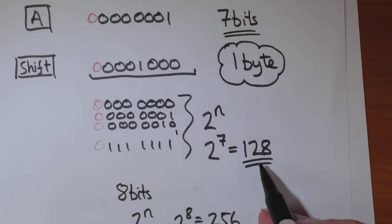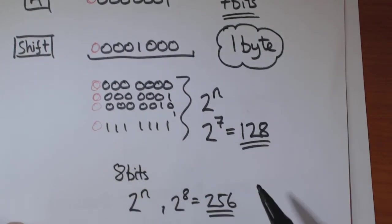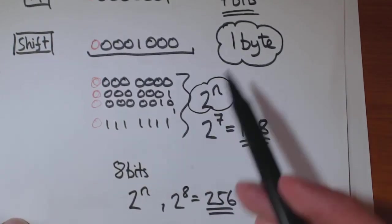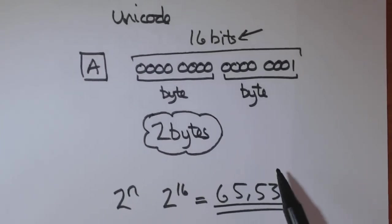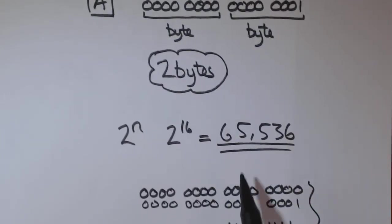ASCII, you can only represent 128 characters. So, just remember this formula. It gives 7 bits per character. With Unicode, you can represent 65,536.